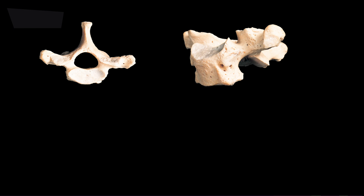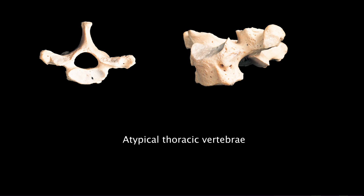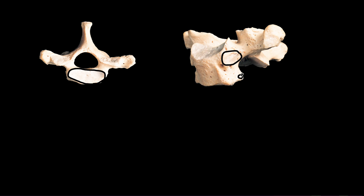The first thoracic vertebra has a broad body, different from a typical thoracic vertebra and more like a cervical vertebra. The edges are beveled like the cervical vertebrae, but the transverse processes do not have any foramina. The spine lies horizontally, and on the side of the body you can see two costal facets — one large facet for the first rib, and a very tiny lower one.